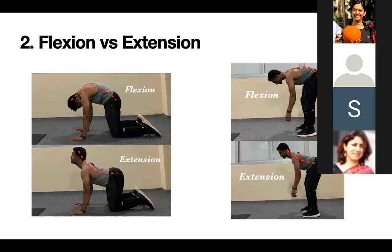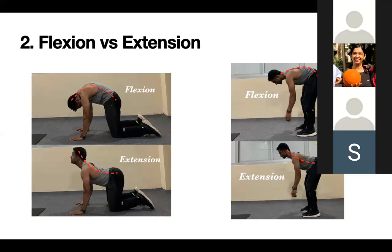Are these positions bad? No — holding these positions is not bad at all. These muscles were made for us to bend down without any problem. But bending down with load is a problem. If you're holding a dumbbell in your hand and bending down in a flexed position, that's a problem. You can bend down like this without any weight — that's completely okay without any load. But adding load will be a problem.